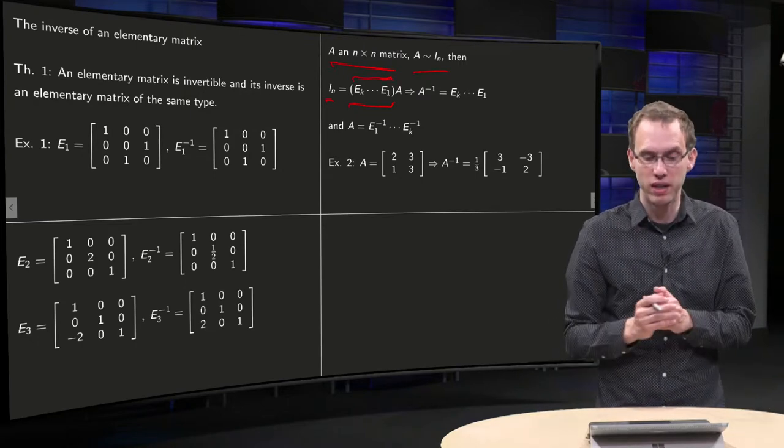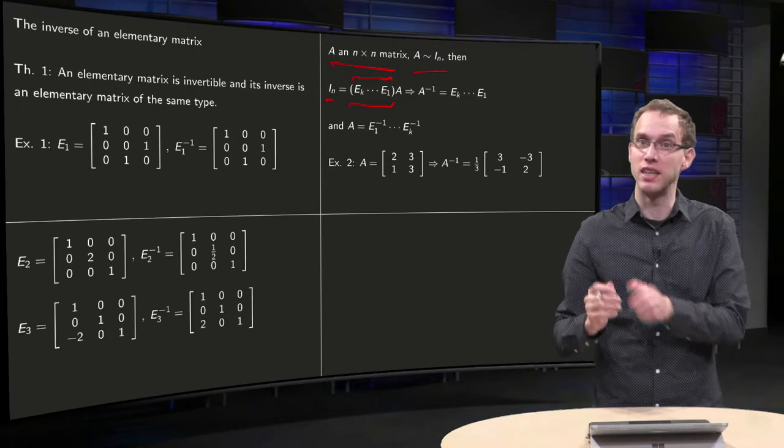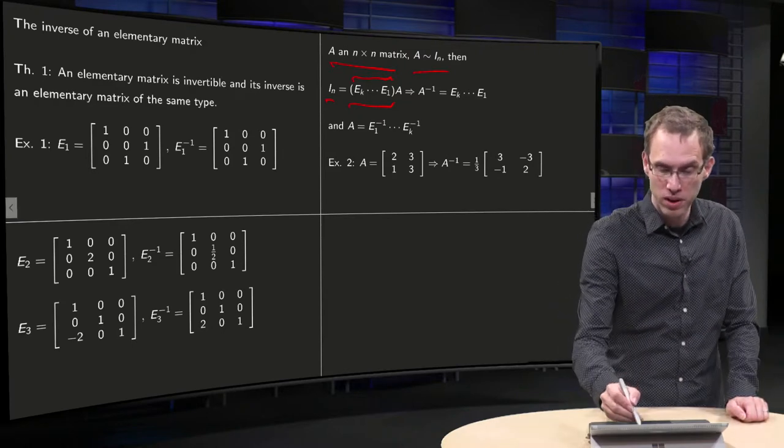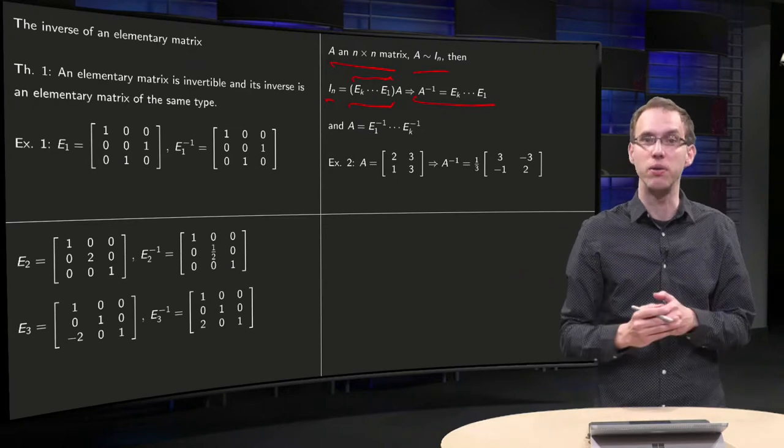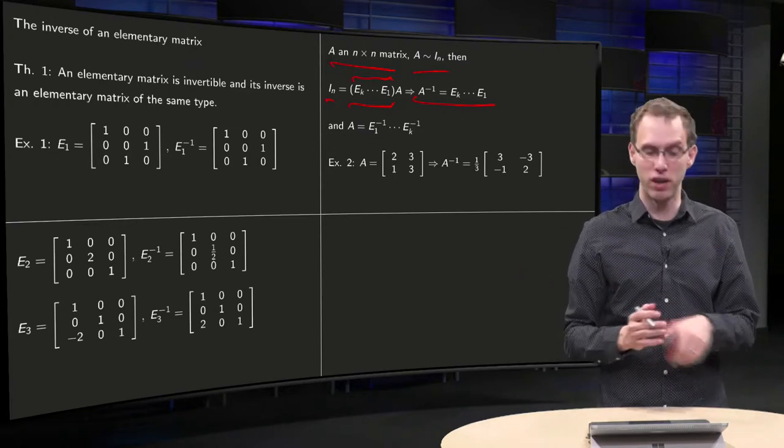But now you can read off what the inverse of A is, because here you have some matrix, the product of EK to E1 times A is the identity matrix, so that means that your A inverse is exactly EK up to E1. So there you have a formula for your A inverse.